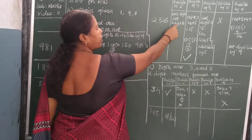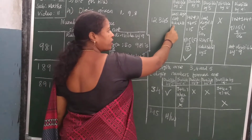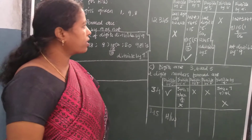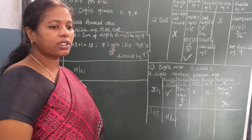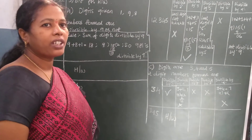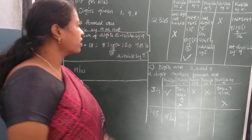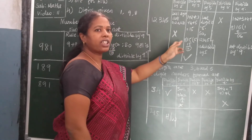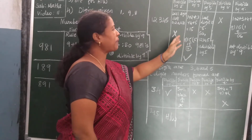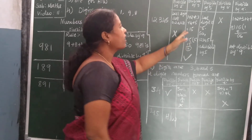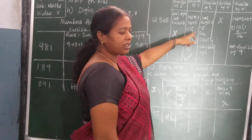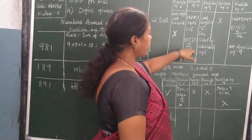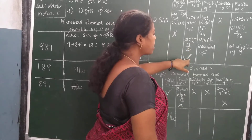What is the rule for 2? The last digit should be 0, 2, 4, 6 or 8. The last digit of 12345 is not 0, 2, 4, 6 or 8. Therefore, it is not divisible by 2. Rule for 3: the sum of the digits should be divisible by 3. When I added all the digits, I got 15. Since 3 fives are 15, it is divisible by 3.